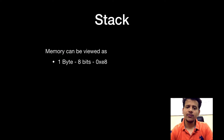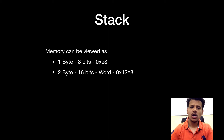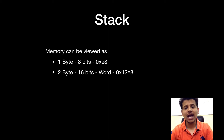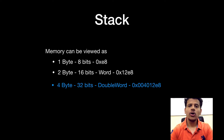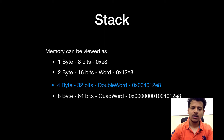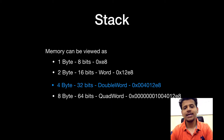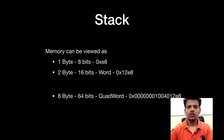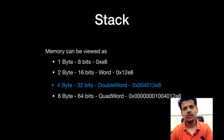Memory can be viewed as 1 byte — for example, E8 — or it can be viewed as 2 bytes, which is 1 word, for example 12E8. It can also be viewed as 4 bytes, for example 004012E8, or as 8 bytes, which is a quad word. For our convention we are going to view memory as 4 bytes.